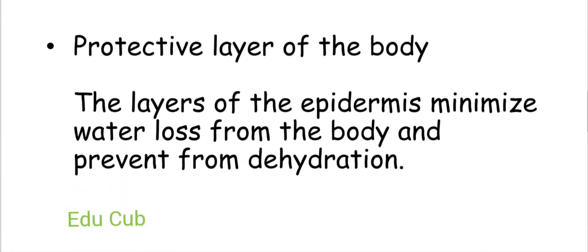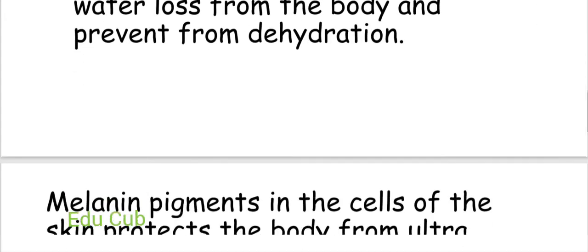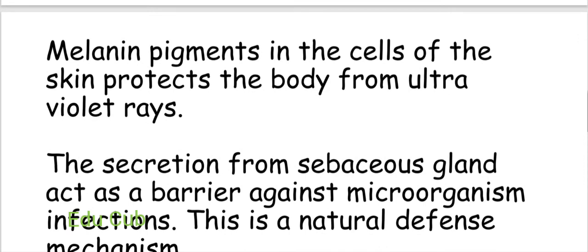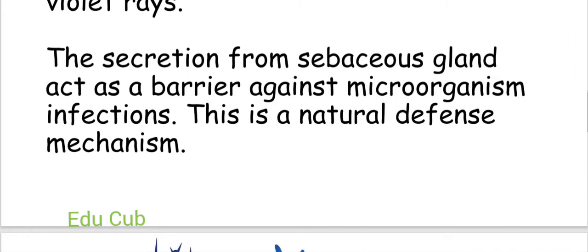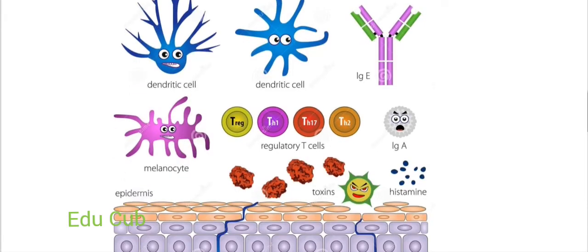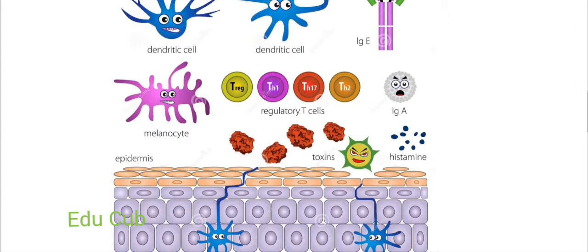Let's discuss the functions of human skin. The first is as a protective layer of the body. The layers of the epidermis minimize water loss from the body and prevent dehydration. Melanin pigment protects the body from ultraviolet rays. The secretion of sebaceous glands acts as a barrier against microorganism infection — this is a natural defense mechanism.